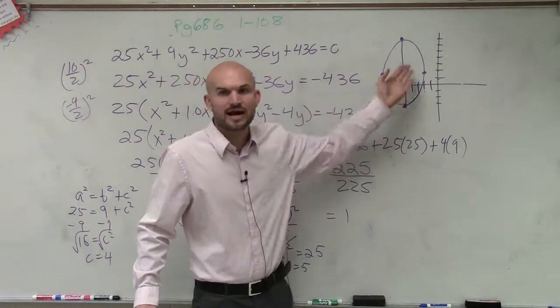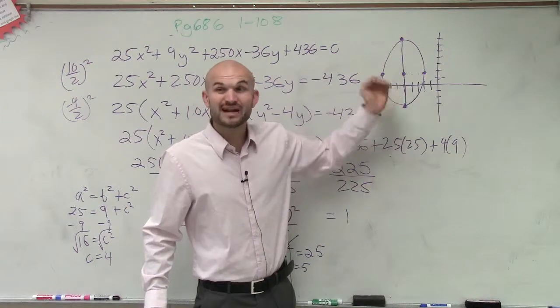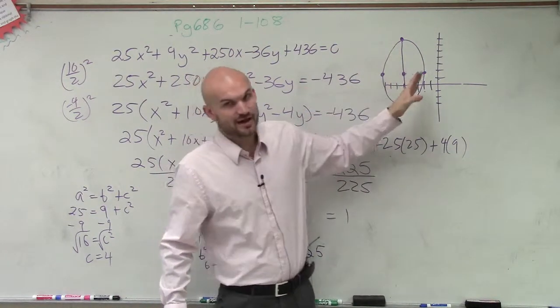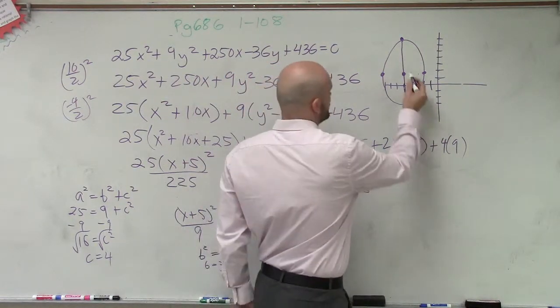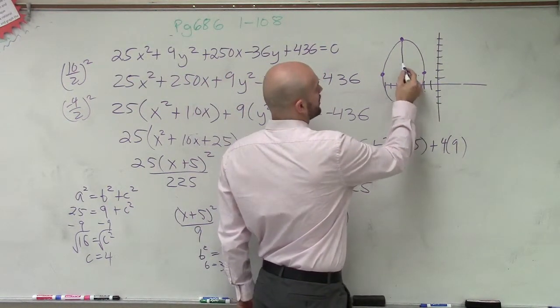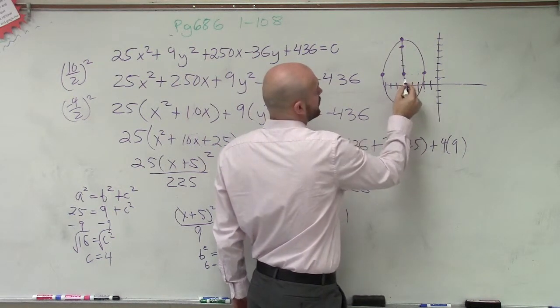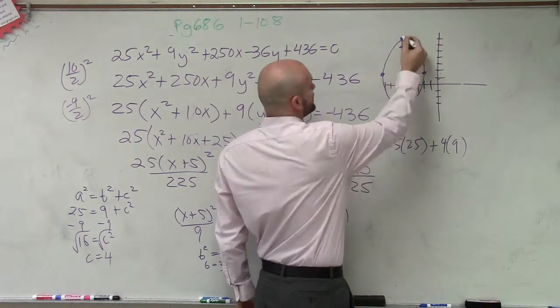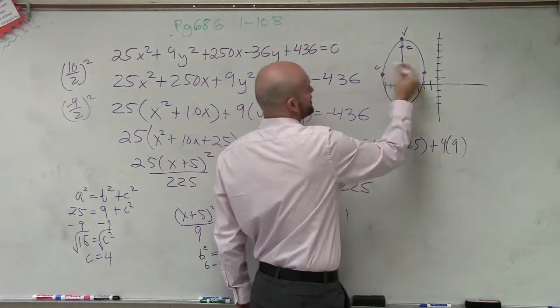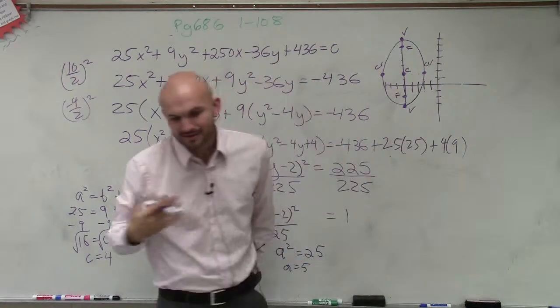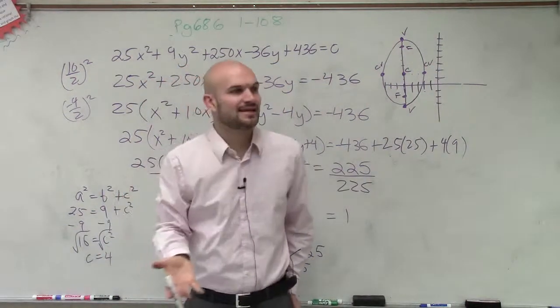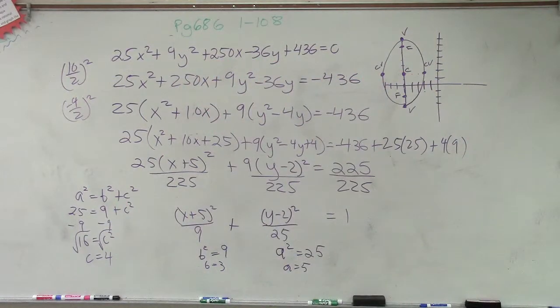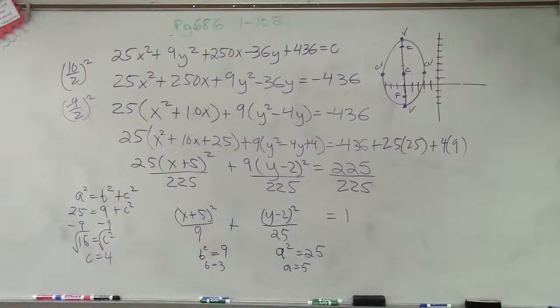Now, here's the difference. Is my c going to go up or down or left or right? Up or down, right? Because your foci, your vertices, all lie on that major axis. So I need to go up 4, down 4. So I have 1, 2, 3, 4, down 4. 1, 2, 3, 4. So now I have the foci, the center, the vertices, vertices, co-vertices, and co-vertices. And guess what? Now, the ellipse lives happily ever after.